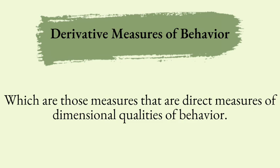If you have been reading our blogs or watching the series, we've been going over and discussing the dimensions of measuring behaviors. Now each dimension is important depending on what behavior you're going to measure. Up next we're going to be talking about derivative measures of behavior, which are those measures that are direct measures of dimensional qualities of behavior.